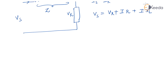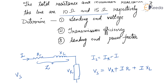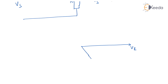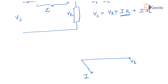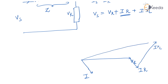Now draw the phasor diagram. Take VR as reference. The load is 0.8 lagging, so current I lags VR. IR is in phase with I, and IXL is 90 degrees leading relative to I. The sum of VR, IR, and IXL gives VS. The angle between VR and I is phi R.